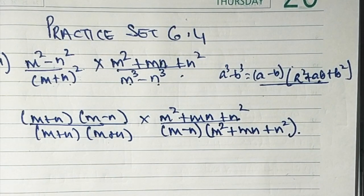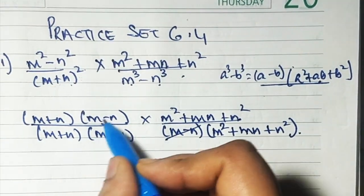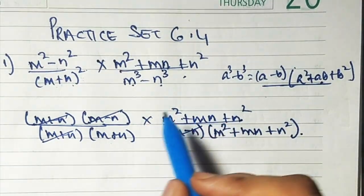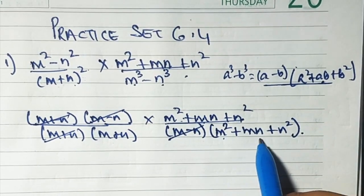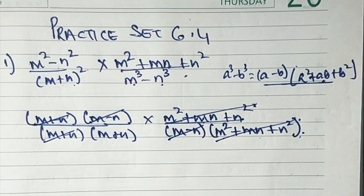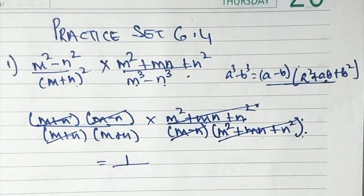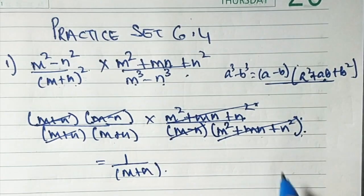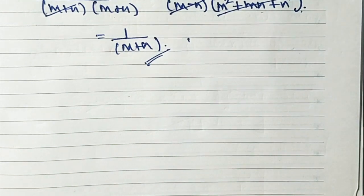Now let's see what can get cancelled. (m - n) cancels with (m - n), (m + n) cancels with (m + n), and (m² + mn + n²) cancels with (m² + mn + n²). What remains on top is 1, and on the bottom is (m + n). So the answer is 1/(m + n).